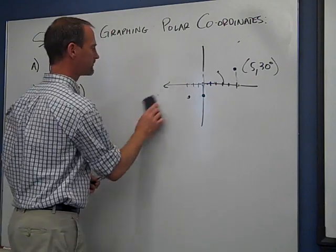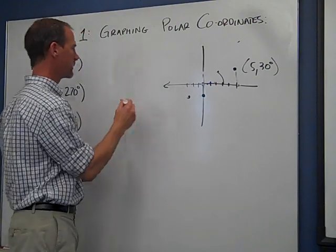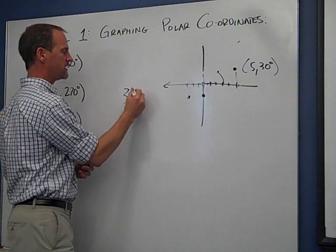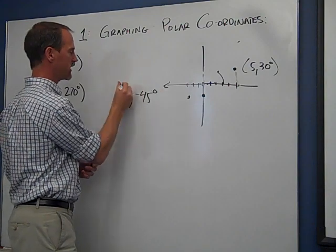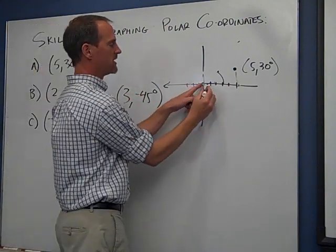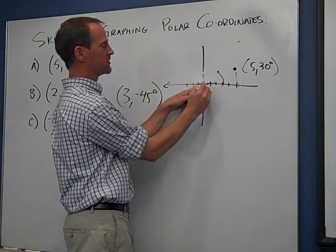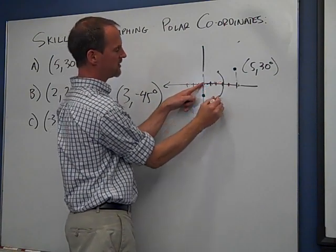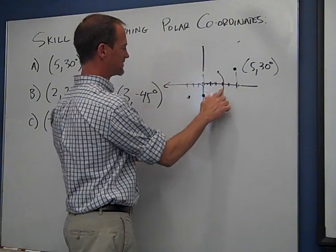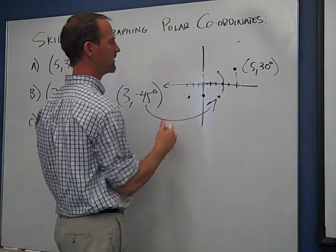You can also have examples where you're doing 3 and negative 45 degrees. And that's the same concept except that we use the opposite direction for our angle rotation. So we go out 1, 2, 3, and then we go down here. And this point is then negative 3 and 45 degrees.